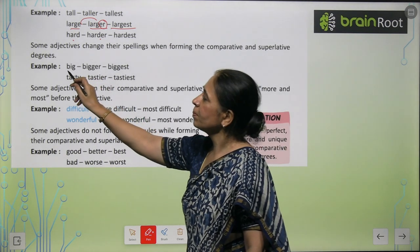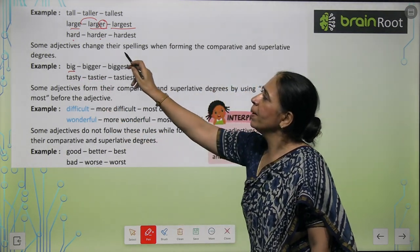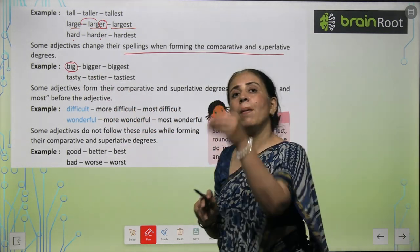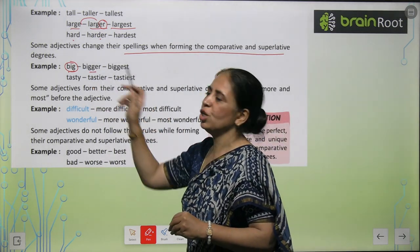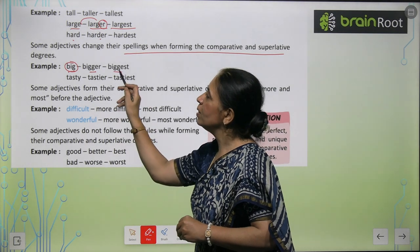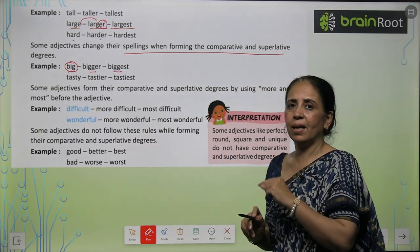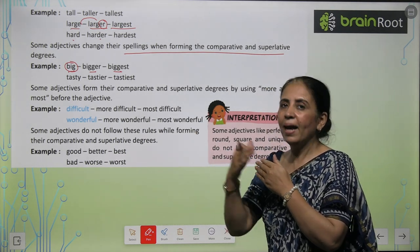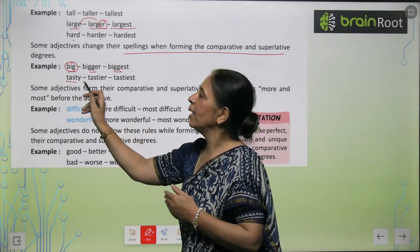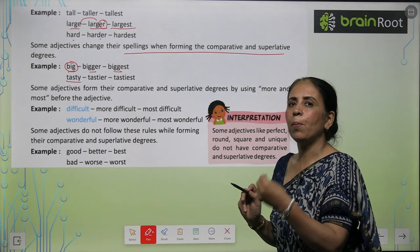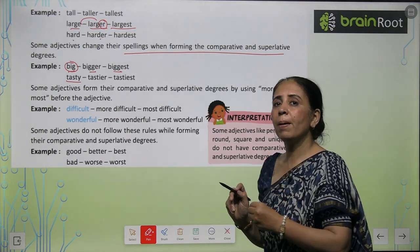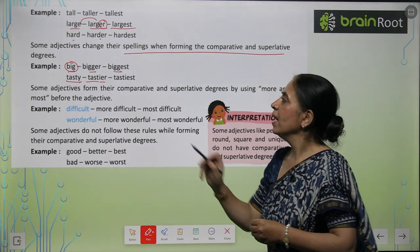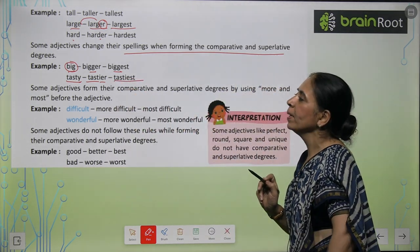When the spelling changes, like with 'big,' we use double G — bigger, biggest. Similarly, 'tasty' is a positive degree. When we write 'tastier,' the Y changes to IER, and the superlative becomes 'tastiest.' So tasty → tastier → tastiest.